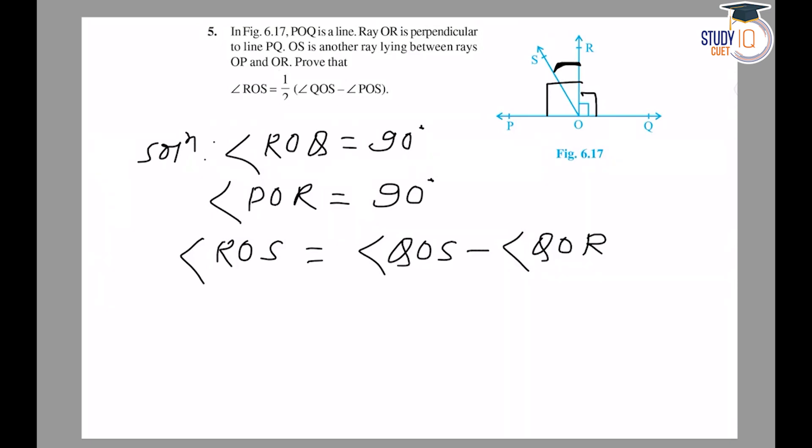So angle ROS equals angle QOS minus angle QOR, which is 90 degrees. And angle ROS is equal to angle QOS minus angle POR. Since angle QOR is equal to 90 degrees, angle ROS equals angle QOS minus angle POR.